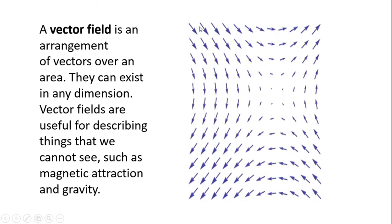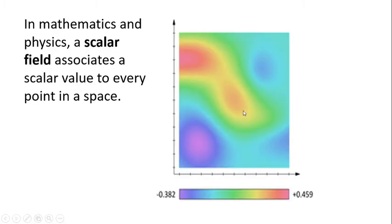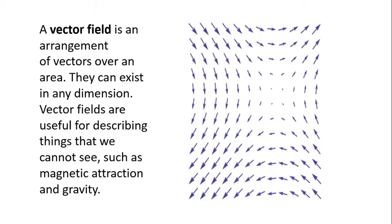A vector field shows you an arrangement of vectors, just like a magnetic field. In a magnetic field, you can see an arrowhead, which indicates a vector because it tells you direction. A scalar field has no arrow, while a vector field tells you a direction. Vector fields can exist in any dimension and are useful for describing things we cannot see, such as magnetic attraction and gravity. Gravitational fields, electric fields, magnetic fields, force fields — around the sun, planets, massive bodies, and black holes — they all have a vector field.